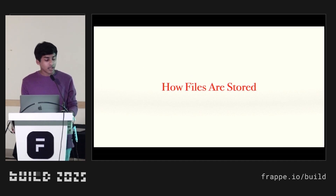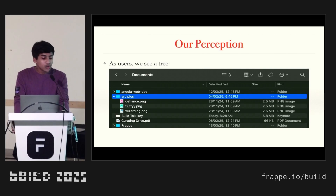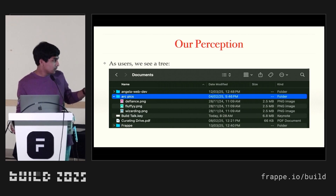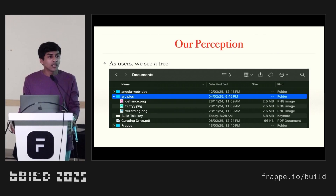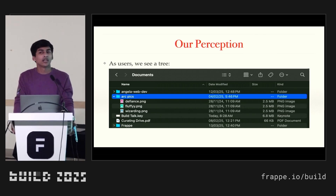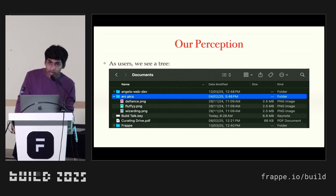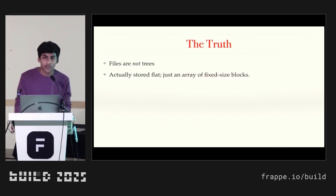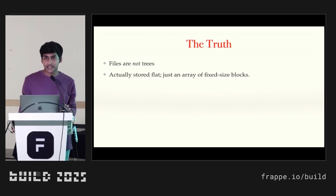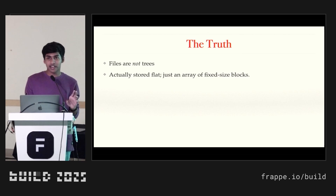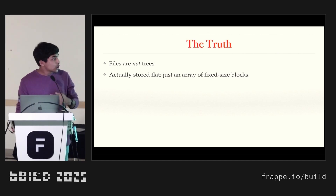Let's talk a bit more about how files are stored underneath the hood in Unix. As users, we see a tree — we see the documents folder, we see folders, we see files inside folders. How do you think it's stored underneath the hood? It's actually stored as a database table of sorts, with the file content stored separately on disk. The file content is actually stored just on the disk separately. It's not a database exactly — it's something called an inode table. That's what we're going to be talking about now.